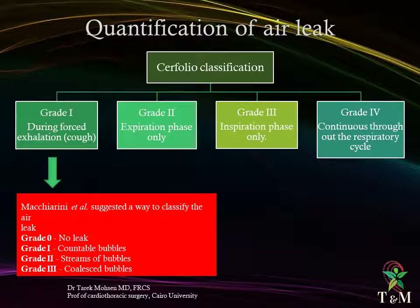Quantification of air leak: Cerfolio classified air leak into four grades according to its relation to the respiratory cycle. Grade 1: leaks during forced exhalation or cough. Grade 2: leaks during expiration only. Grade 3: leaks during inspiration only. Grade 4: leaks continuously throughout the respiratory cycle. It is of note that grade 3 and 4 denote a bronchopleural fistula. Further, Marchetti classified grade 1 into four sub-categories — grade 0: no leak; grade 1: countable bubbles; grade 2: streams of bubbles; grade 3: coalesced bubbles.